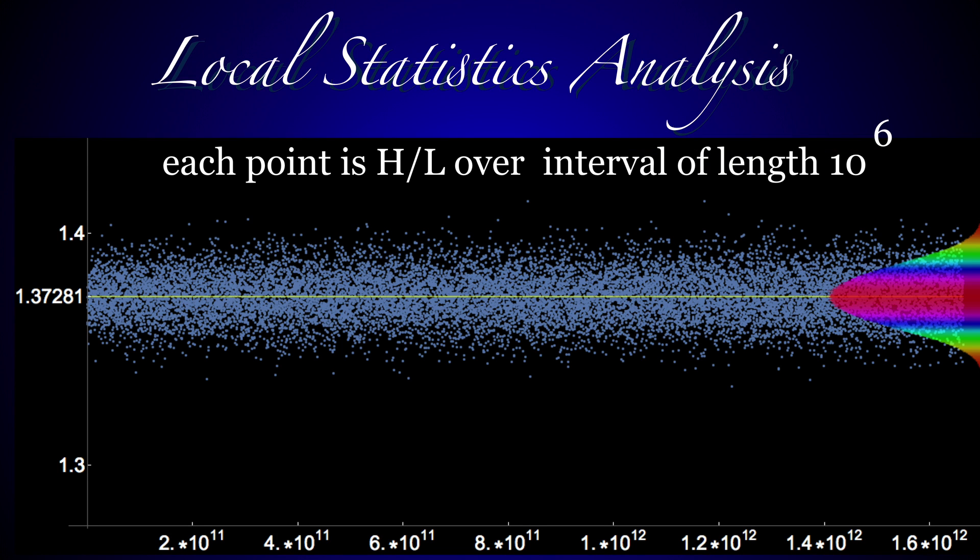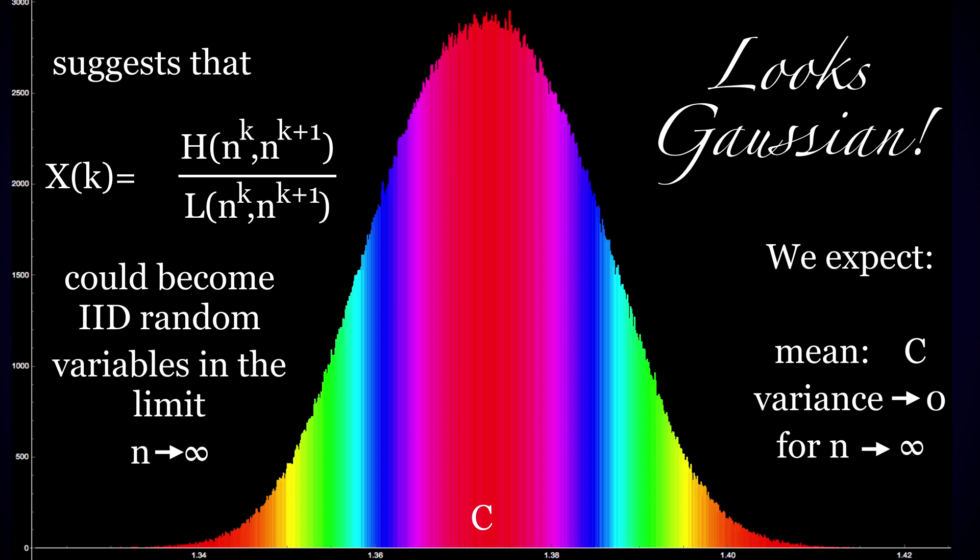When taking intervals of say 10 million and plotting the quotient H/L, where H is the number of H primes and L the number of L primes in that interval, we see a much more regular picture. The statistics look Gaussian, as if the individual patches were independent. We suspect the distribution becomes Gaussian, with variance going to zero if the patches get longer.